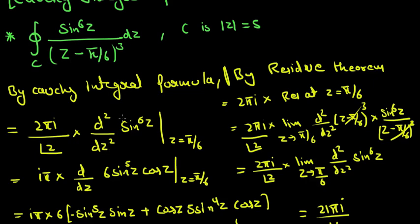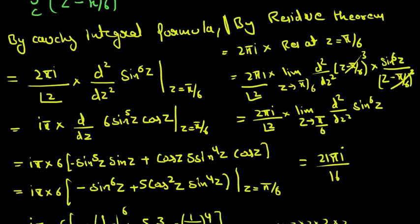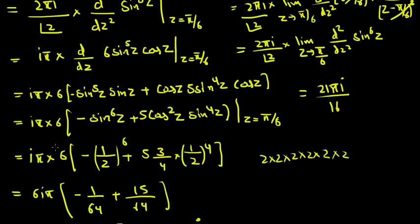The function is up there, so just taking the second order derivative and then we will put z equal to pi by 6. After taking first derivative and second derivative, we get this expression and putting z equal to pi by 6 in different things.